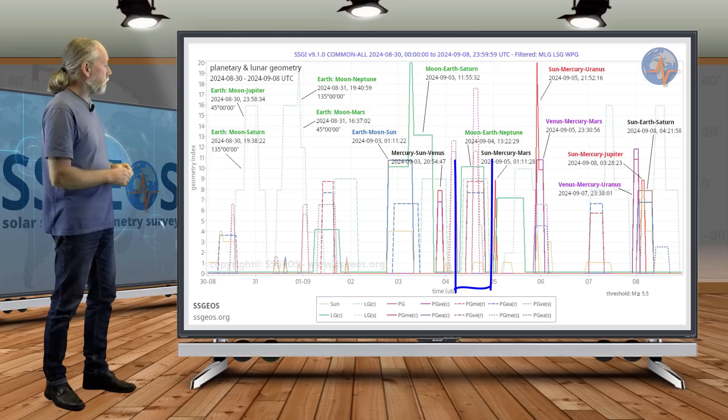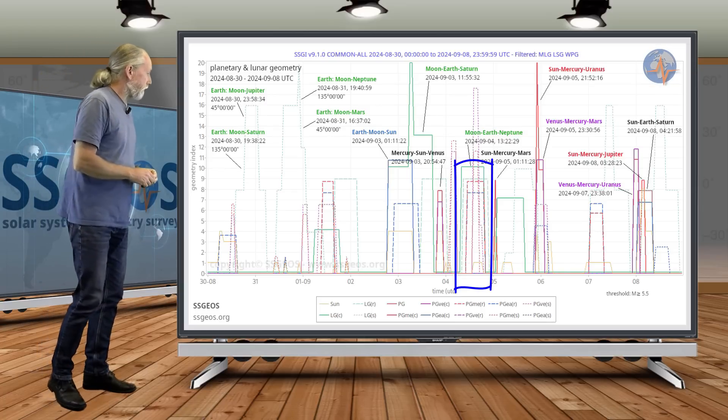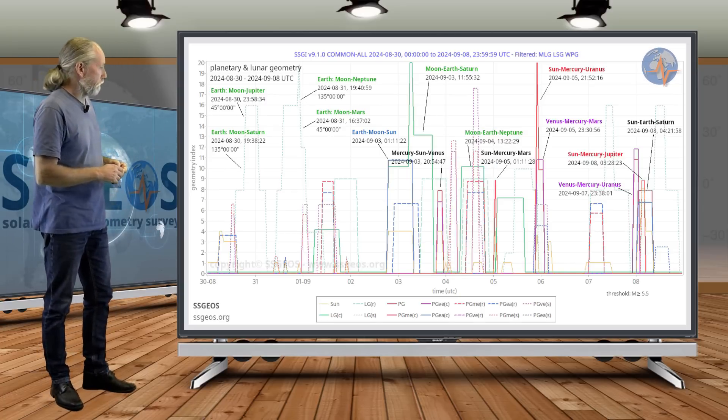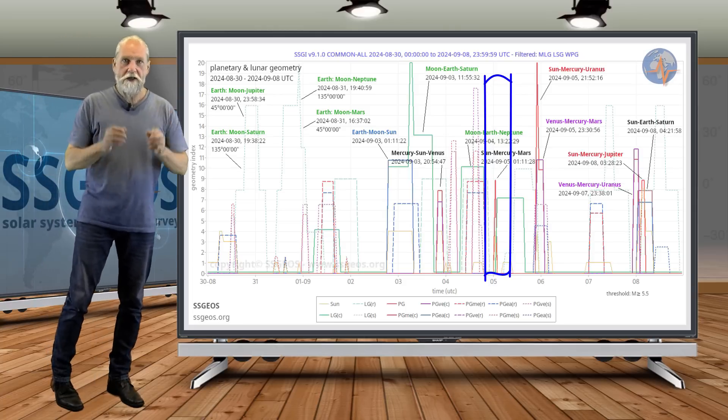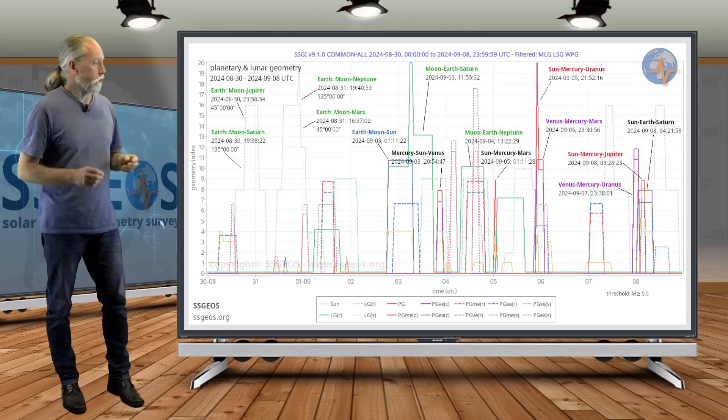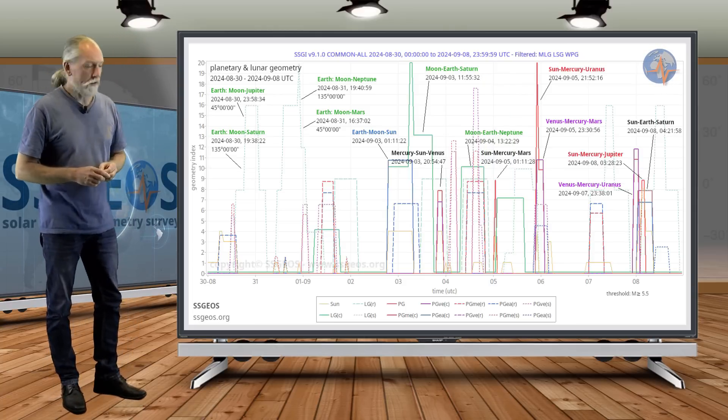Then we have a new moon on the 3rd, and also converging, almost converging with Moon, Earth, Saturn—that's because Earth is moving between the Sun and Saturn—and that conjunction will actually be exact on the 8th.